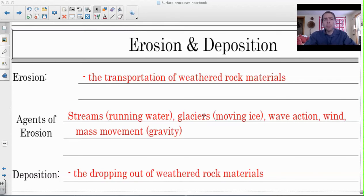Erosion is the picking up of that weathered rock material and transporting it to another place. The things that do that are streams, so running water. We've seen that in a lab how streams can pick up and carry material.